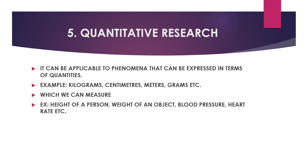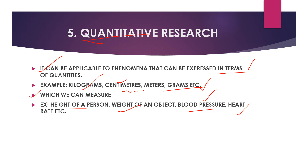Next, quantitative research — this is very important. Quantitative research is applicable to phenomena that can be expressed in terms of quantities. Some quantities are there — for example, kilograms, centimeters, meters, grams. We will express and measure this research in terms of quantities. It has some measures and parameters. Examples include: percentage of literacy in India, weight of an object, blood pressure readings. We are measuring these parameters to do quantitative research.